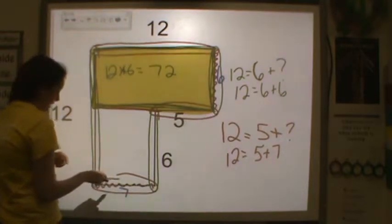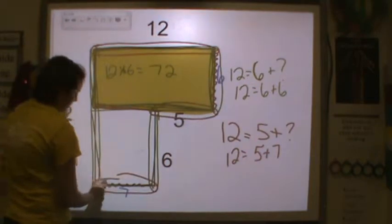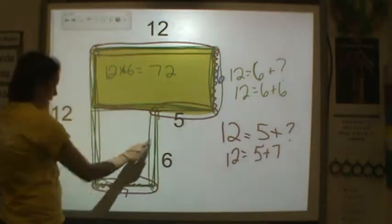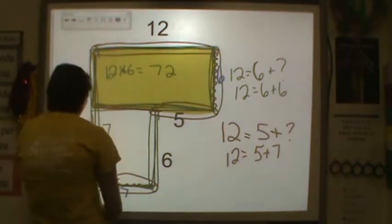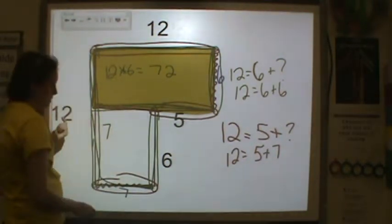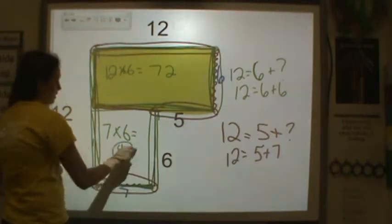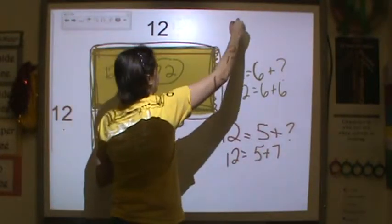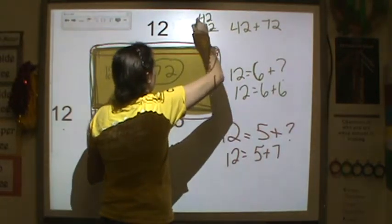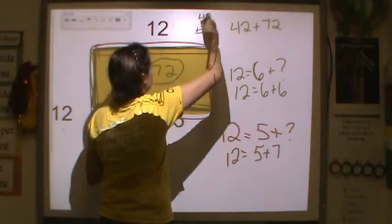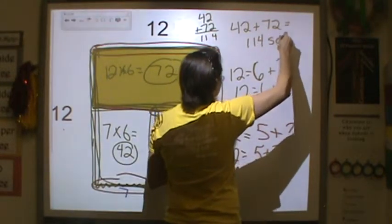Now let's look at the second shape. It's not all the way across, so it can't be 12 — it's equal to 7. And it's not all the way up, so it has to be 6. 7 times 6 is 42. The last step is to add them together: 42 plus 72 equals 114 square units.